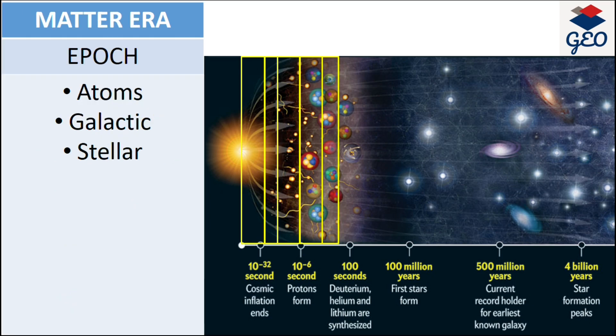After the ability of the universe forming chemical elements, the matter era began. The matter era represents three features of epochs, which are atomic, galactic and stellar. The first epoch of matter era was the atomic era. During this era, the universe temperature cooled down for the first time. And also, for the first time, the electron attached to nuclei. This process created the second element, which is hydrogen.